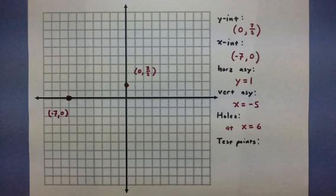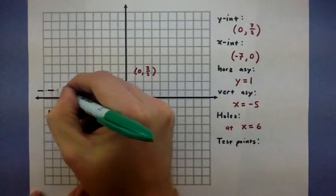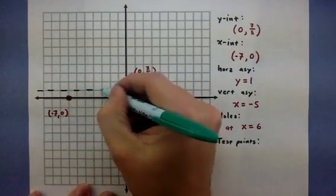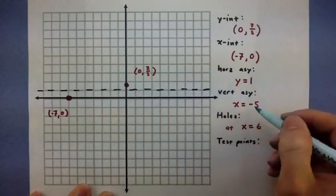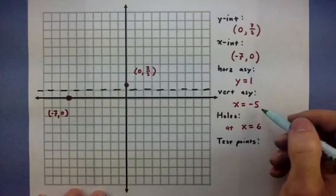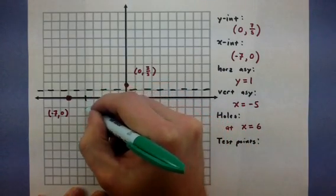Now, to really start getting a good picture of what this looks like, the asymptotes will be key. So, I have a horizontal asymptote at y equals 1. So, imagine putting a horizontal line right at 1. And a vertical asymptote at negative 5. So, negative 1, 2, 3, 4, 5. So, right here.